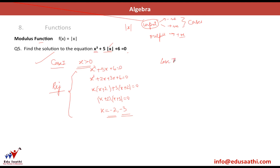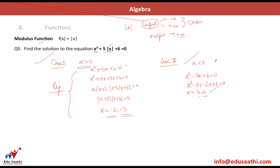Case 2: suppose x is negative. The equation becomes x² − 5x + 6 = 0. Solving gives x = 2 and x = 3 — both positive. But we assumed x is negative — again a contradiction. This case is also rejected. So the number of solutions is 0; there is no solution to this equation.